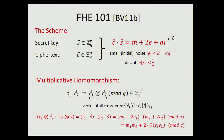Why does this work? When I compute the inner product of the tensored ciphertext with the tensored secret key, by definition of tensor product I get the product ⟨C₁,S⟩·⟨C₂,S⟩. Substituting back, mod Q this product equals (M₁ + 2E₁)(M₂ + 2E₂) = M₁·M₂ + 2·(something of order E₁·E₂). So we get M₁·M₂, but the noise grows: if the noise was B before, it's now roughly B².